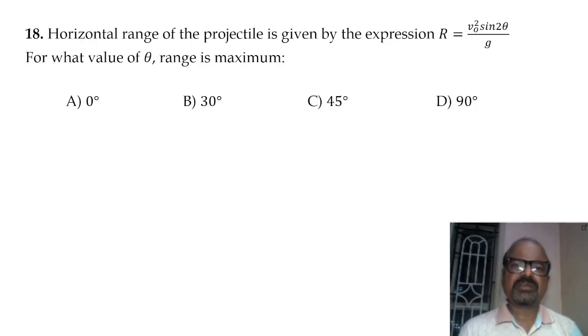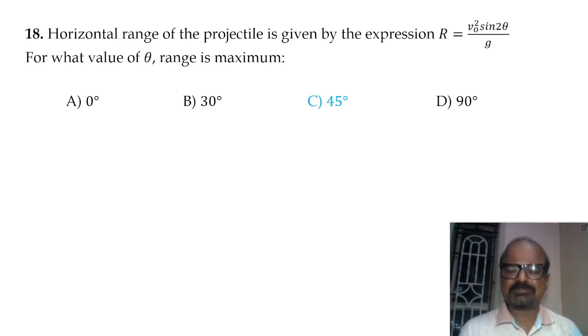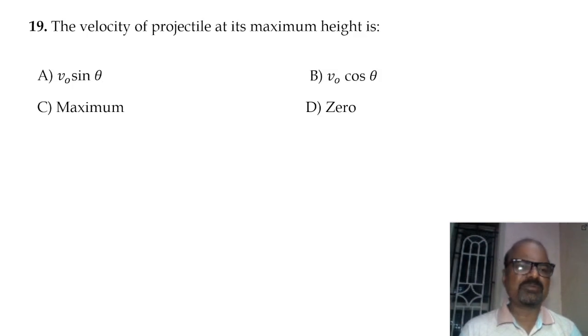The horizontal range of the projectile is given by R. For the value of theta equal to 45 degrees, the range is maximum.